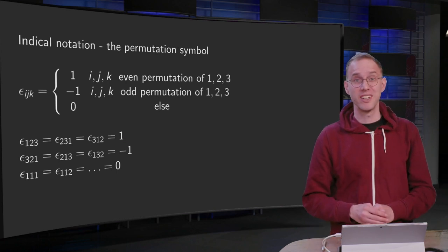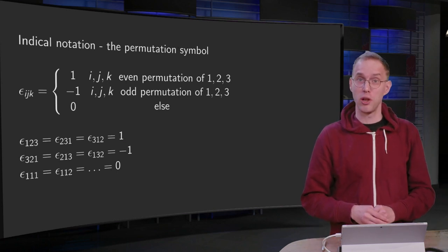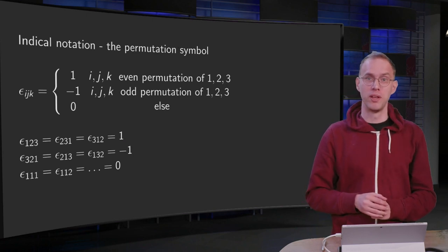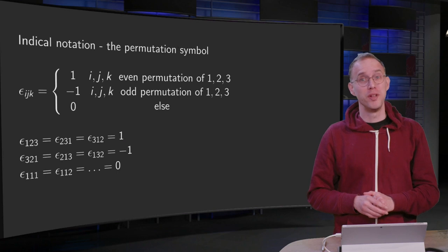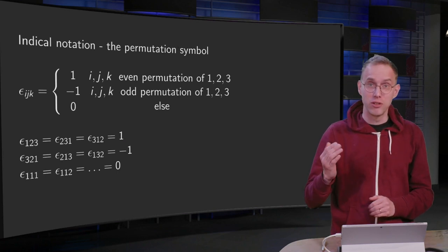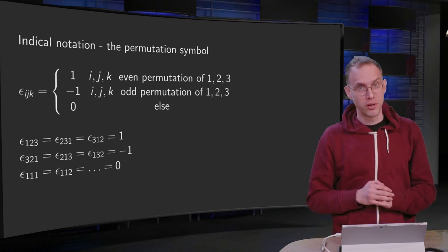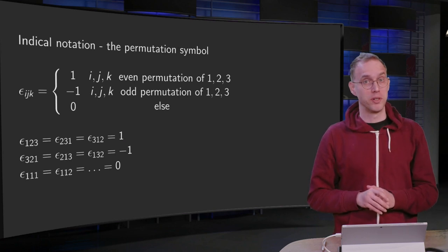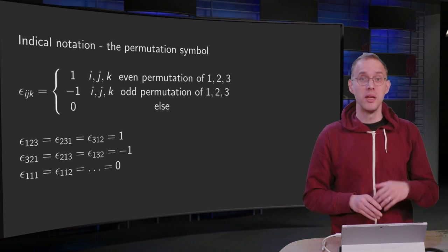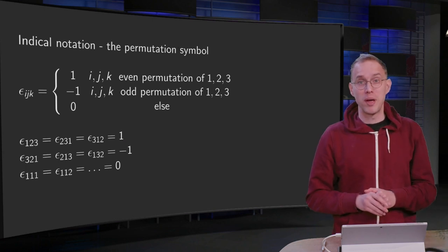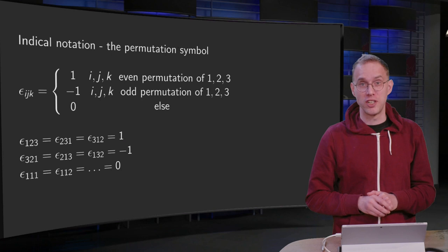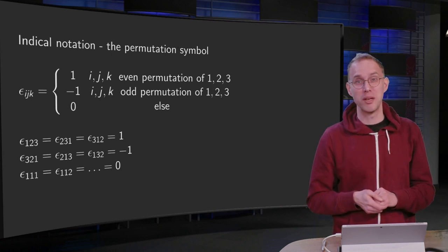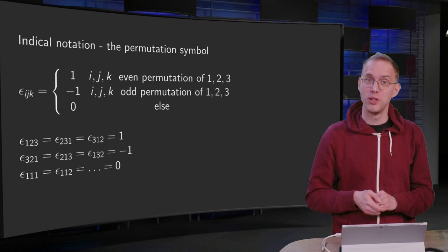In this video we will encounter the second symbol that is used a lot in index notation: the permutation symbol. This symbol might be new to you, unlike the Kronecker delta that we encountered before. We will first take a look at what the permutation symbol is and how to memorize it, and we will also immediately take a look at how it can be used in the first application: the cross product.